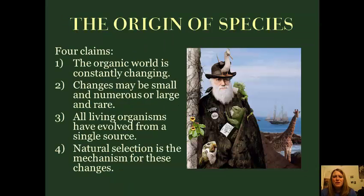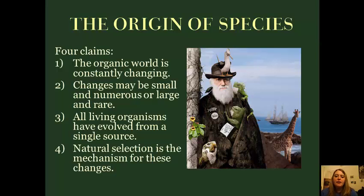If you look at the Origin of Species, there are basically four claims being made. First and foremost is the claim that the organic world is constantly changing. While this probably doesn't sound controversial to us now, for Darwin's time this was a huge deal. In the video you'll see people making these concessions like, 'I know this is what it looks like, but the Bible says this, so there's no way this could actually be the case.' So the fact that the world is constantly changing is actually a really controversial premise.